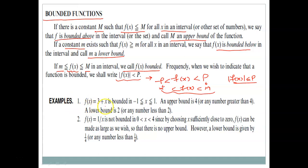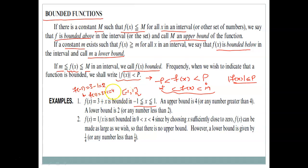Consider the example f(x) = 3 + x, which is bounded in the interval [-1, 1]. The minimum value is f(-1) = 3 + (-1) = 2, and the maximum value is f(1) = 3 + 1 = 4. So f(x) lies between 2 and 4, where 2 is the lower bound (m) and 4 is the upper bound (M), satisfying the definition of boundedness.